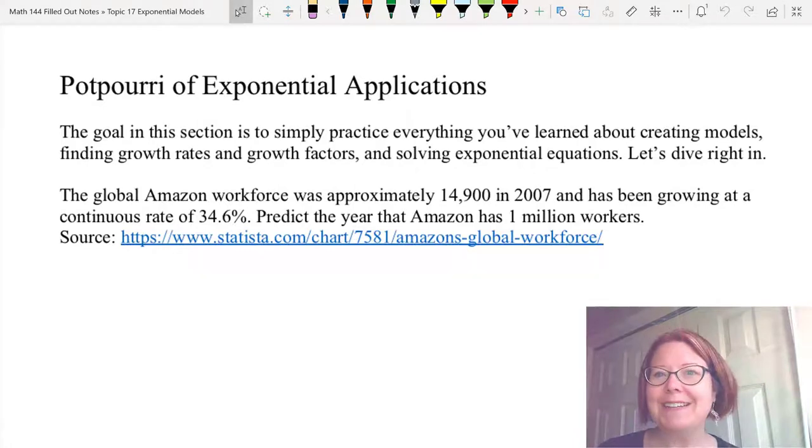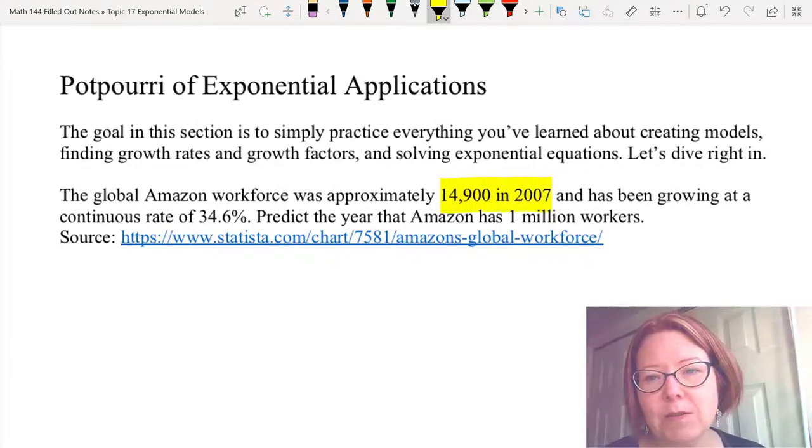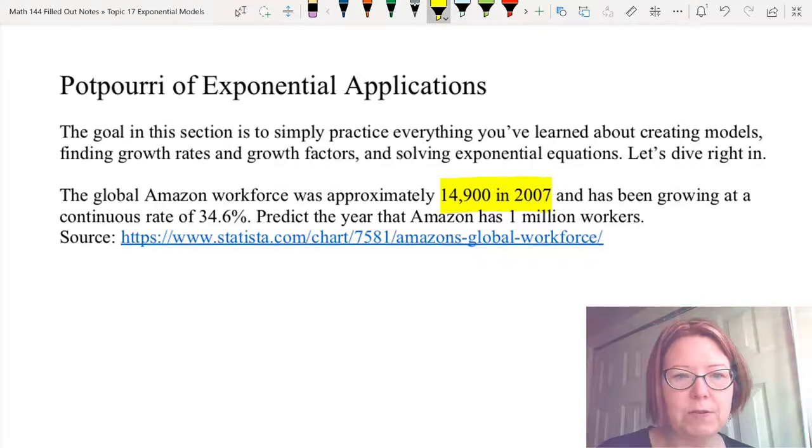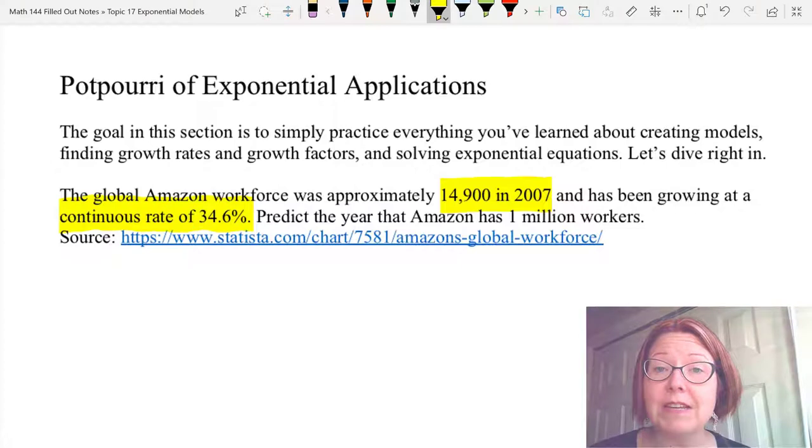Now with all of these problems, it's never a bad idea to start by declaring some variables. It appears that we have an initial value in this problem of 14,900 in 2007. We also have a continuous growth rate, which tells us we have an exponential function that's following continuous growth, and then we have a question which we'll answer after we find a model.